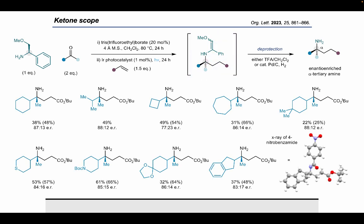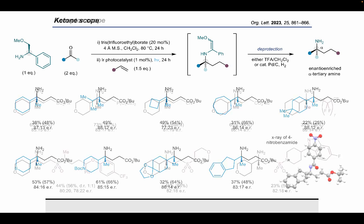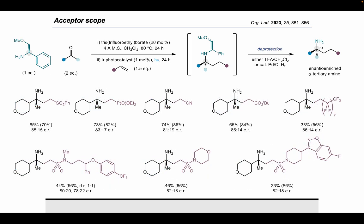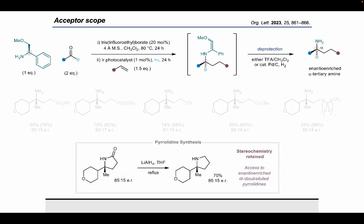A variety of alpha-methyl ketones with a range of functionality could be successfully introduced, including cyclobutanes, piperidines, and indanes. X-ray crystallography of a four-nitrobenzoyl protected product confirmed the absolute stereochemistry of the major enantiomer, and this was in agreement with the predictions made by our stereochemical model. In terms of acceptors, a diverse range of electron-deficient alkenes were shown to be suitable coupling partners, including vinyl sulfonamides carrying pharmaceutically relevant payloads. We were also able to demonstrate product derivatization to access enantioenriched pyrrolidines via subsequent lactamization and reduction, with complete stereochemical retention at the alpha center.